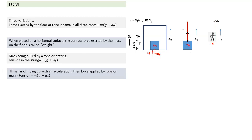If you have to slide down a rope and you hold it very lightly, the rope exerts very little force, and you will slide downward with acceleration g — in that case, the rope applies no force. But if you want to go down with a lower acceleration, you tighten your grip on the rope, friction force starts acting, and the force becomes bigger. If you slide down with acceleration g/2, the tension in the rope will be half of what it would be if you were holding the rope with zero acceleration.